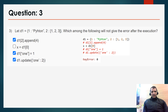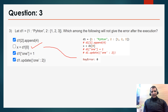Question 3: let d1 equal to this one. Which among the following will not give an error after execution? When I executed all the commands in Spyder, only x = d1[0] gives a KeyError equal to 0. Since it is a multi-select type question, the correct answer will be a, c, and d.